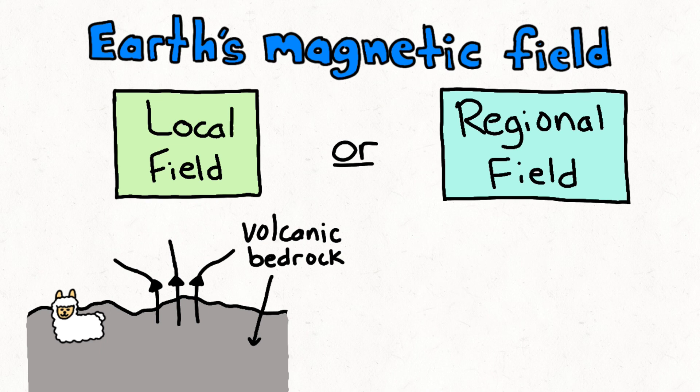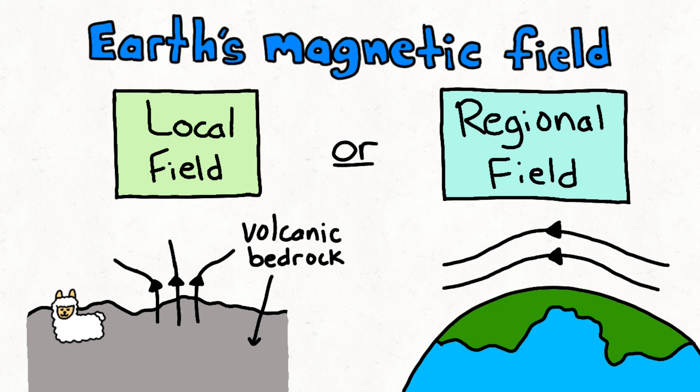Regional magnetic fields, on the other hand, are magnetic fields that span over much larger areas. For example, if you wanted to estimate the magnetic field of your city or location, you would be interested in the regional magnetic field.